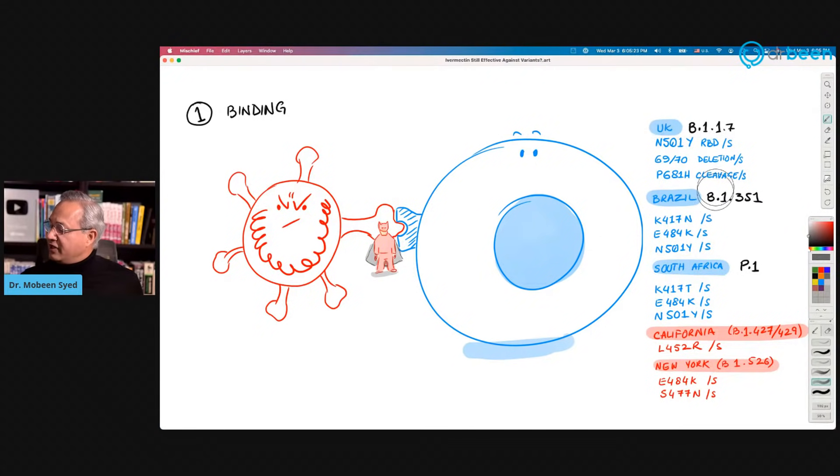For example, UK variant has spike protein mutations: N501Y, there is a deletion on spike protein at 69 and 70 amino acid, then P681H - that is a mutation in the cleavage site of the spike protein S1 and S2. This variant is B.1.1.7. The spike protein is slightly changed.